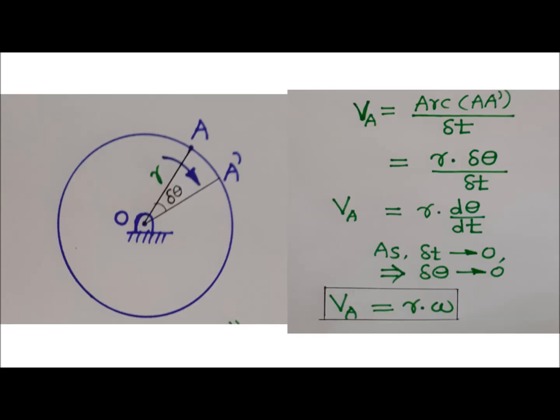We want velocity at point A. Hence here we will have delta T tends to 0. Due to that, delta theta will also tend to 0. Instead of delta theta upon delta T, we can write d theta upon dt, that is differentiation of theta with respect to time t.